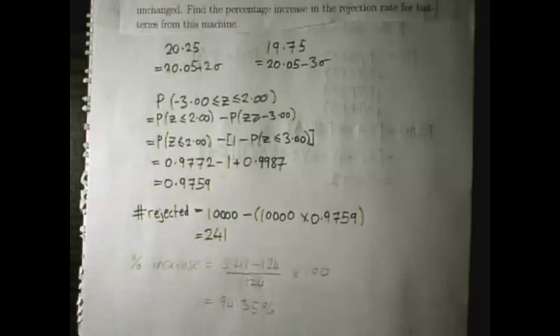Same as last time, to find the number that are rejected, you take the 10,000 that are produced, take away how many are accepted, which is 0.9759 times the 10,000 produced, and you end up with 241.